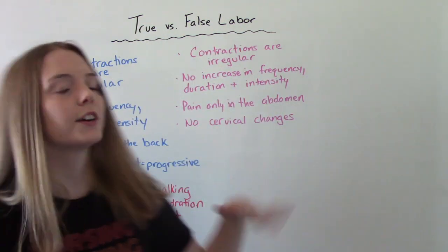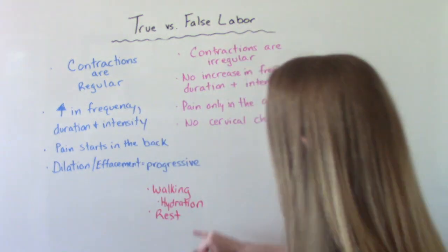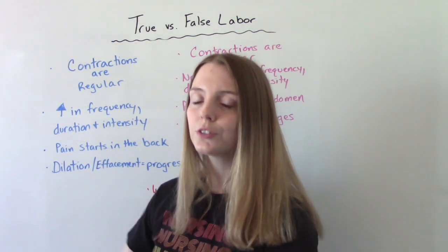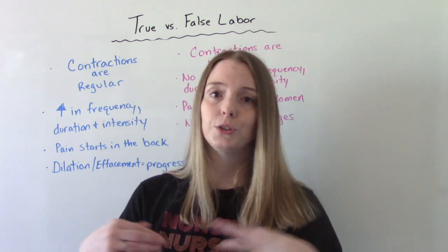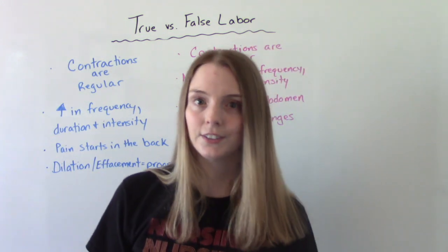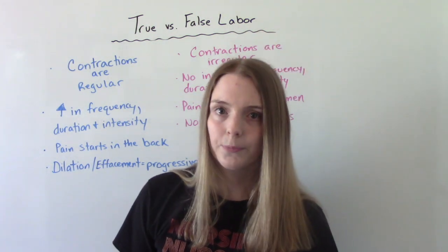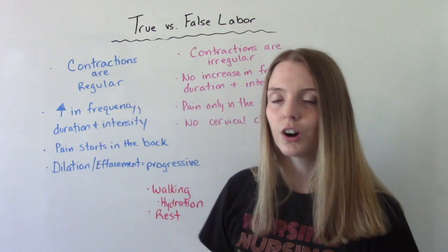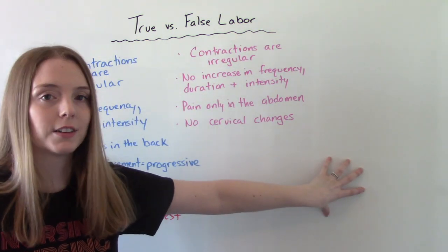If you're in false labor, the contractions will lessen in intensity and frequency and might go away altogether. Also try rest. Near the end of pregnancy, physical activity like going to work, jogging, or doing household chores can trigger contractions. Put your feet up and relax. If the contractions don't stop and become regular, more frequent, longer, and stronger, you're probably in real labor. If they go away when you rest, that's false labor.